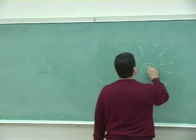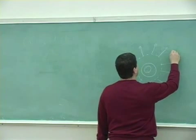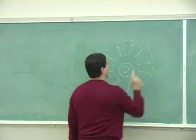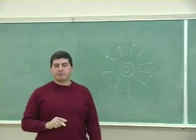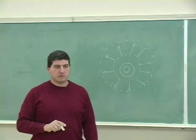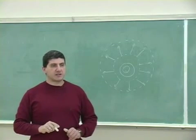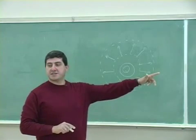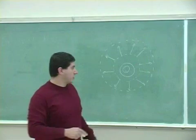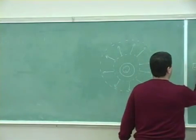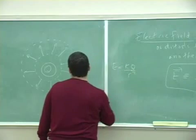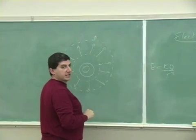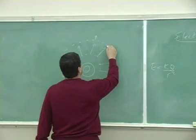If you go twice the distance away, the electric field strength is going to decrease by a factor of four. E is kQ over r squared. So twice the distance, the electric field should go down by four. So if I were to draw the electric field lines, it's going to be four times smaller.